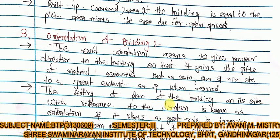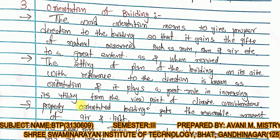The setting of the plan of a building on its site with reference to direction is known as orientation. It plays a great role in increasing utility from the viewpoint of climate conditions. According to climate conditions, we should orient the building so that we can use natural resources effectively.